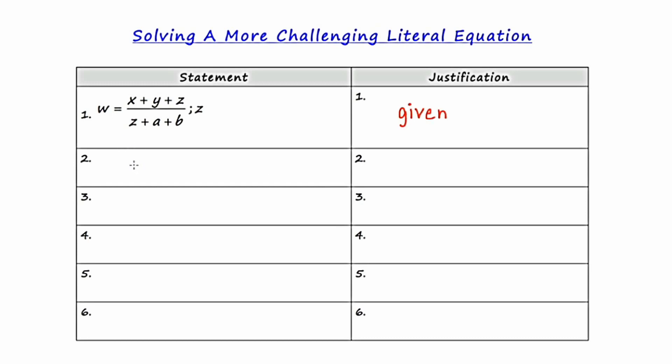Okay, so for my first transition from step one to step two, I'm going to put the W over one, which is a legal maneuver. W and W over one are the same thing. And now I'm going to cross multiply, and I'm going to say that W times the quantity Z plus A plus B is equal to X plus Y plus Z times one, which is just X plus Y plus Z. And the process which brought me to this step was cross multiplication. So that's what I'm going to write over here for justification number two.